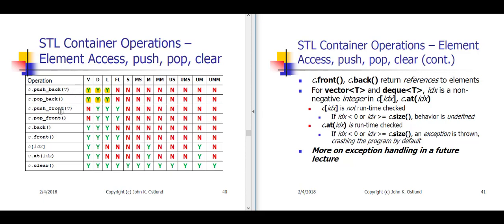Push front, on the other hand, is inefficient for vector, but it's efficient for deck, list, and forward list. Forward list is only efficiently modifiable at the front, whereas vector is only efficiently modifiable at the back. Pop front also is not provided for vector, but is provided for deck, list, and forward list.